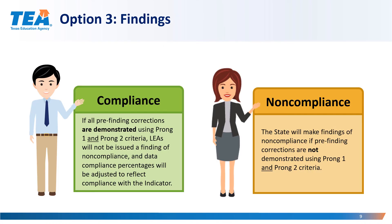The state will review the clarification data, and if all pre-finding corrections are demonstrated using Prong 1 and Prong 2 criteria, LEAs will not be issued a finding of noncompliance. The LEA's data compliance percentages will be adjusted to reflect compliance with the indicator. The state will make findings of noncompliance if pre-finding corrections are not demonstrated using Prong 1 and Prong 2 criteria.